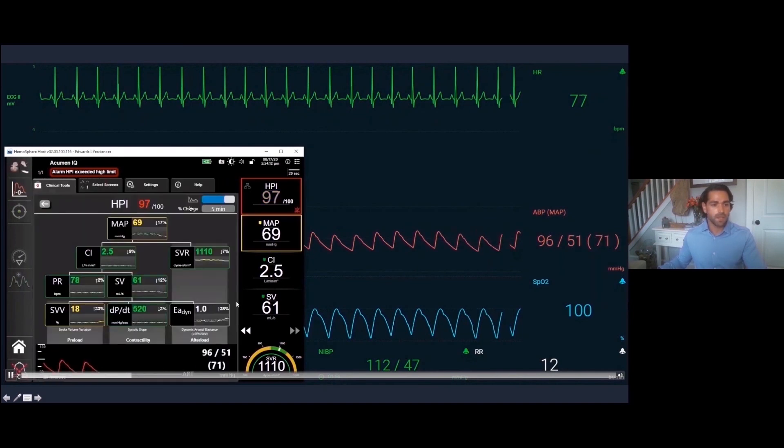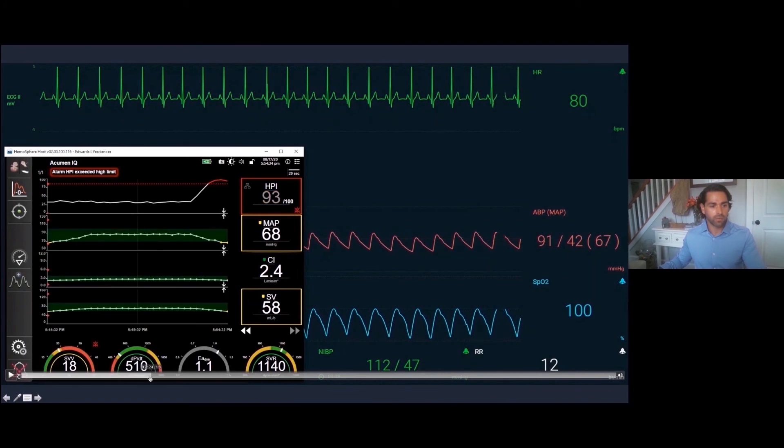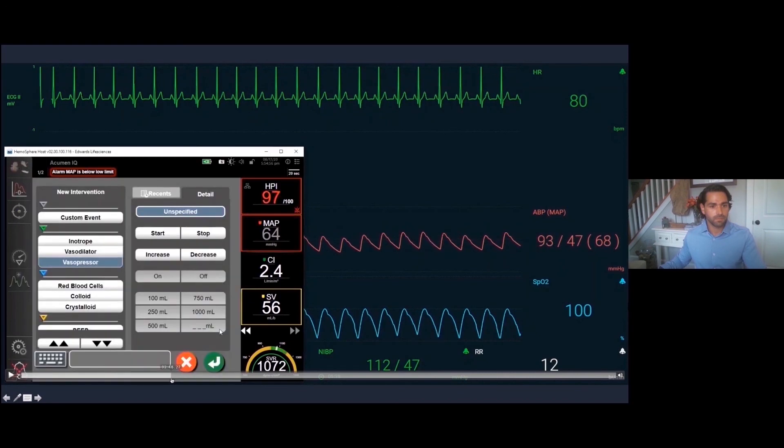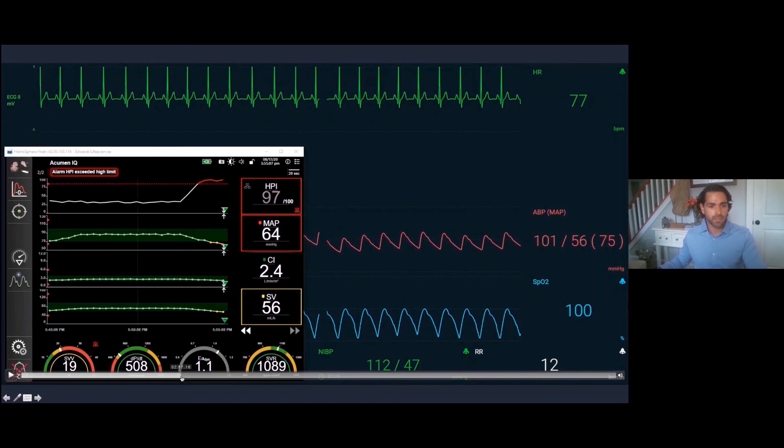It takes us to our secondary screen. Our MAP 69, down 17% in five minutes. Stroke volume variability up 33% in five minutes. Our EADI shows volume responsive, probably what this patient's going to need. We see our provider leaves that screen, clicks this button, pulls up an intervention screen. This provider picks a vasopressor. We have our arrow that says we started something. We gave a bolus of levophed.